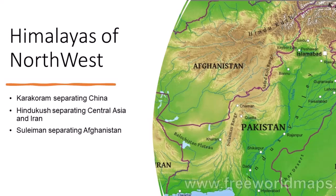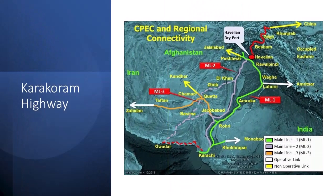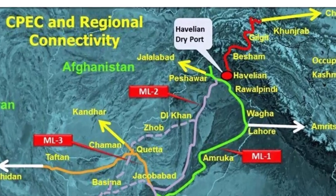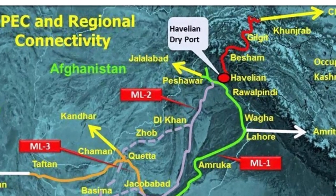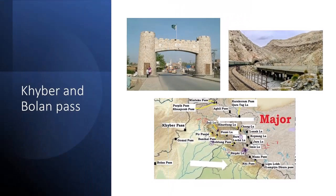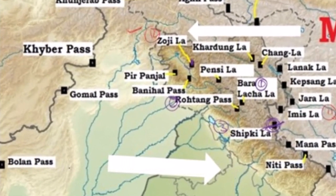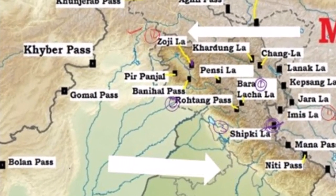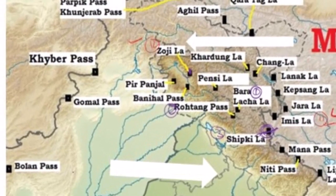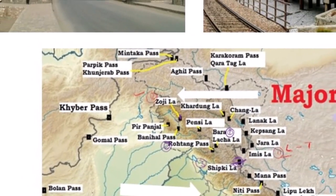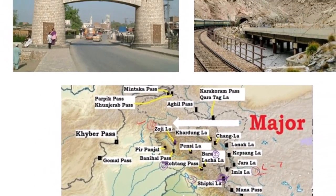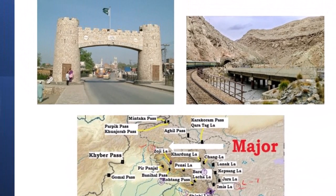The man-made Karakoram Highway provides connectivity between Pakistan and China as part of the China-Pakistan Economic Corridor. The natural Khyber and Bolan Passes connect Pakistan with Afghanistan and were the main passages through which people and animals travelled between India, Central Asia, and further to Europe.